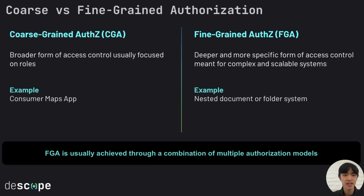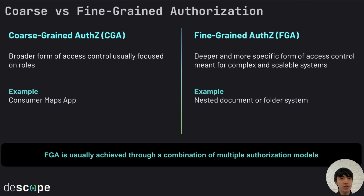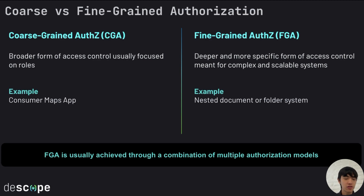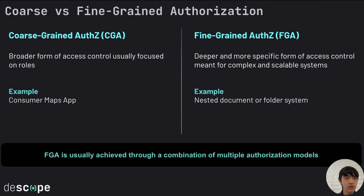Moving into coarse versus fine-grained authorization, when we think about the different models — RBAC, ABAC, and REBAC — it would be really good to first consider how finely grained our authorization model needs to be for an application. For basic consumer apps, there often only needs to be a very broad set of authorization checks. Maybe the application simply needs to verify that the user is an owner of some documents or content, and sharing is not a feature or is very straightforward. More complex systems with nested document and folder structures, hierarchical relationships, or very specific sharing mechanisms likely need more fine-grained permissions. In general, RBAC is used for more coarse-grained authorization models, while ABAC and REBAC result in more fine-grained ones, but it's usually a combination of these different models.